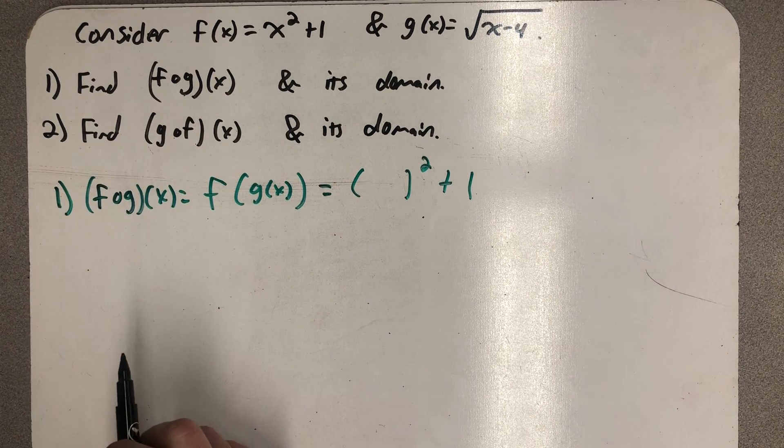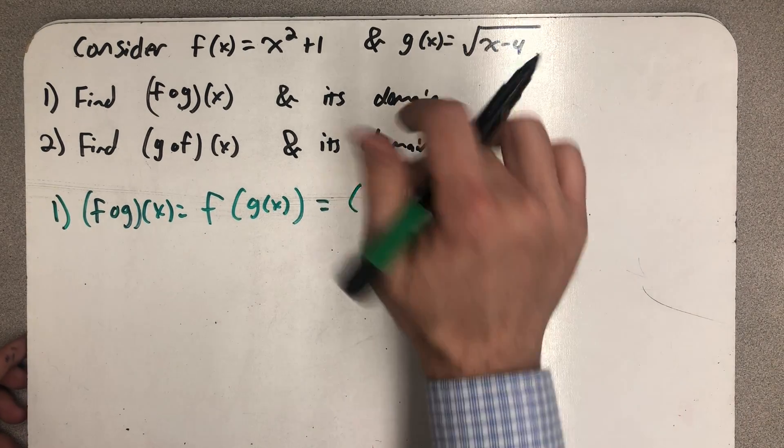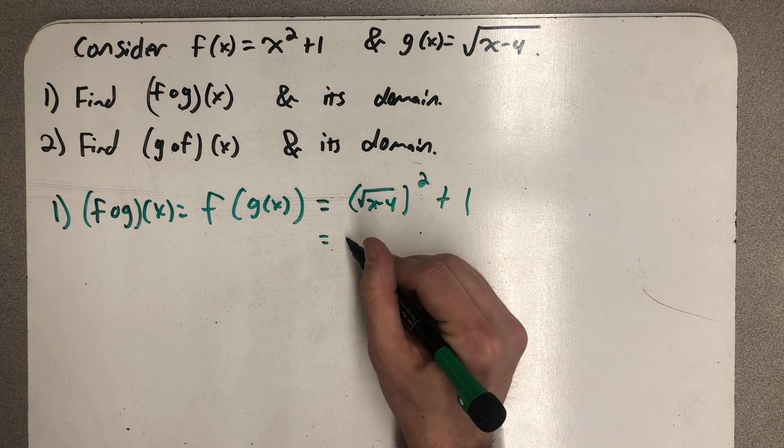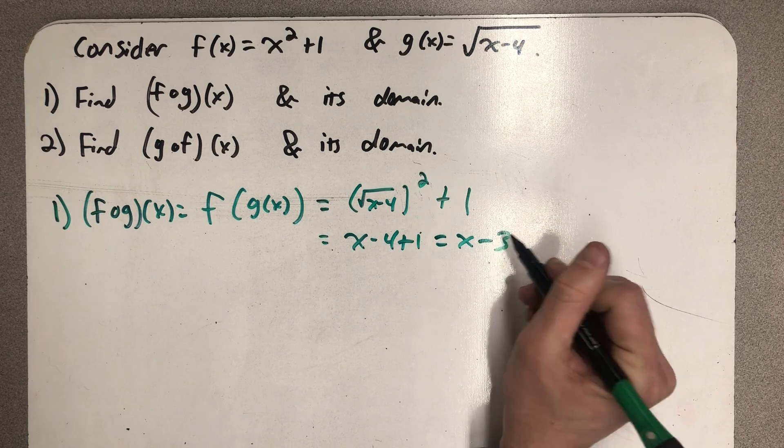whatever goes in for x is what I am squaring, and here that's something supposed to be g of x, which is the square root of x minus 4. Well, I simplify that and I get x minus 4 plus 1 equals x minus 3.